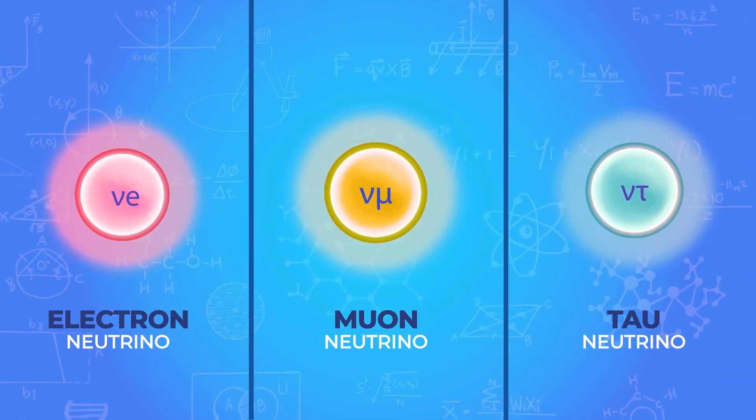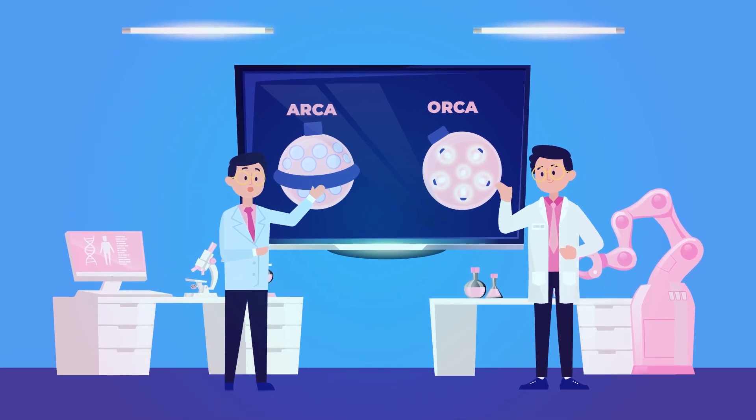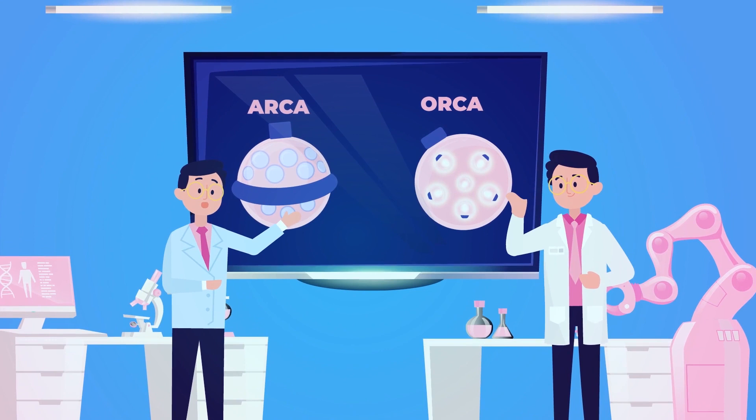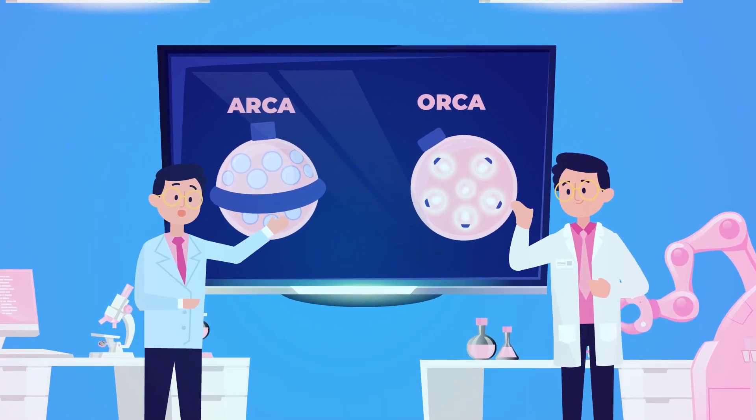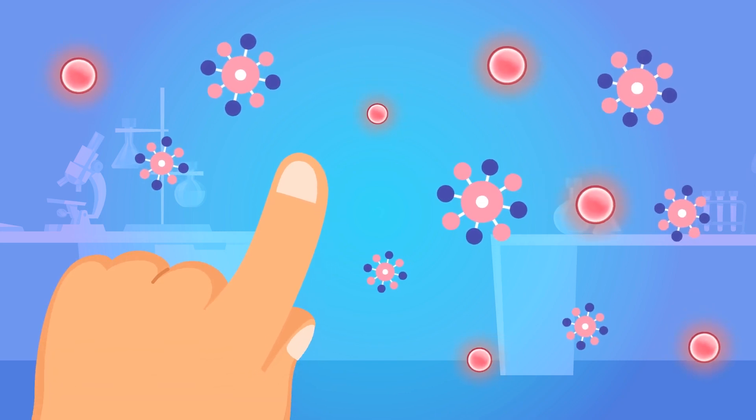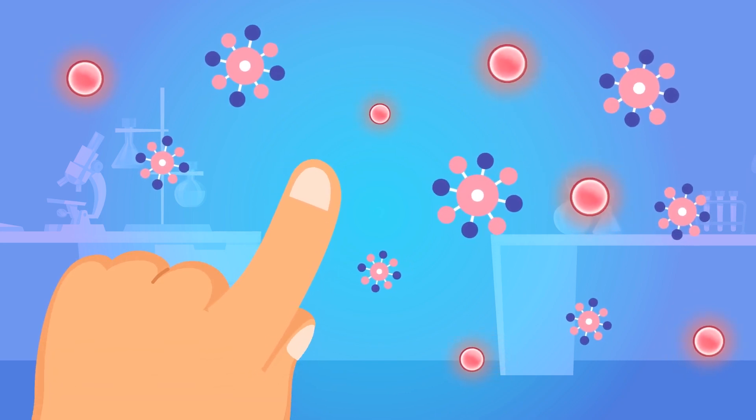So, how does the KM3Net work? ARCA and ORCA are not your ordinary telescopes and have been designed to increase the chances of observing neutrinos. As the particles are neutral, they don't interact with matter very often. In fact, about one million of them pass through a fingernail every second unnoticed.